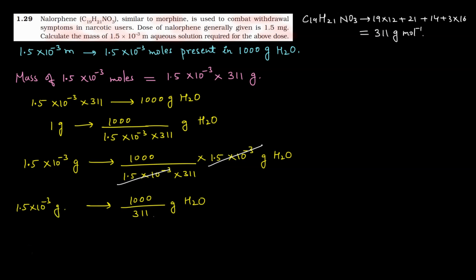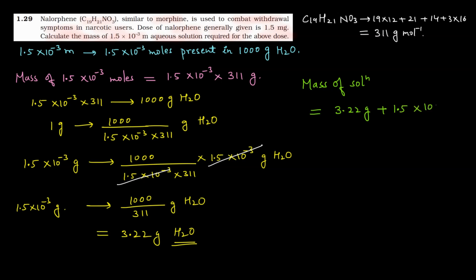So 1000 ÷ 311 grams of solvent is present along with 1.5 mg of Nalorphine. Calculating this gives 3.22 grams of water (solvent). Now the mass of solution = solute + solvent = 3.22 grams (solvent) + 0.0015 grams (Nalorphine, i.e., 1.5 × 10⁻³ g) = 3.2215 grams. This is the mass of solution required to prepare a dose containing 1.5 mg of Nalorphine.